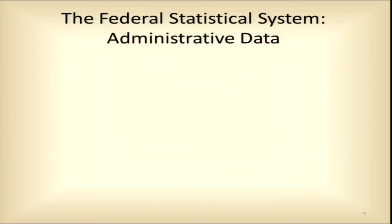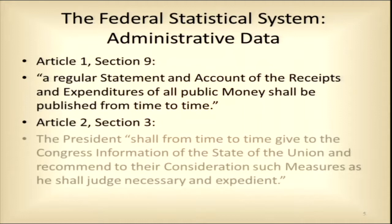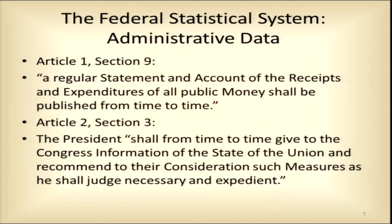The second leg of the statistical system derives from the administrative data systems produced by the American state. These come from constitutional provisions — that expenditures and accounts of public money shall be published and that the president is required to present the State of the Union to Congress. Those provisions meant that very early in the development of the American state, administrative statistics were both compiled and published, so that by 1810 we begin to get statistical compilations and the administrative structures to collect, codify, and standardize all of that.